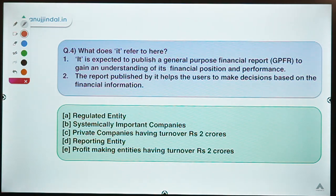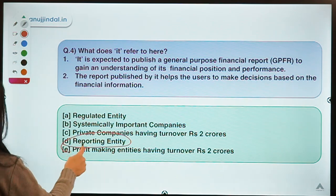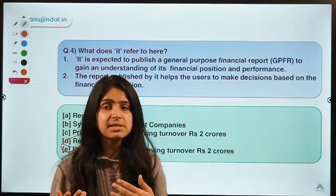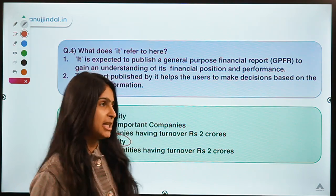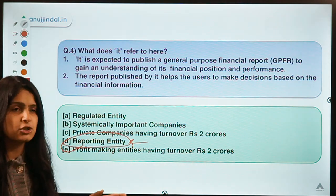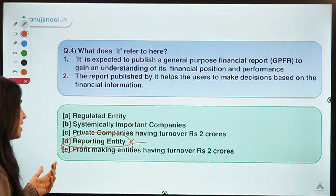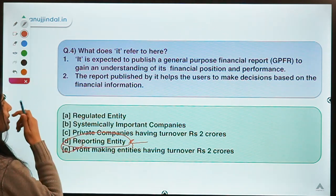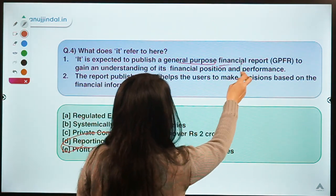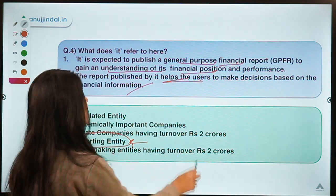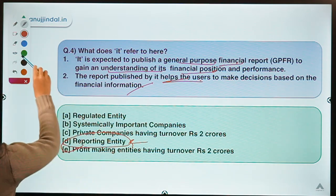The fourth question asks what a term refers to, given two statements, and the correct option is D — reporting entity. A reporting entity is any entity that is supposed to provide financial information about itself to the public so that investors can make decisions based on it. It is not necessary that they are companies — they can be other financial institutions, charitable organizations, or non-profit organizations. They are supposed to prepare a general purpose financial report to help users gain an understanding of their financial position and performance.